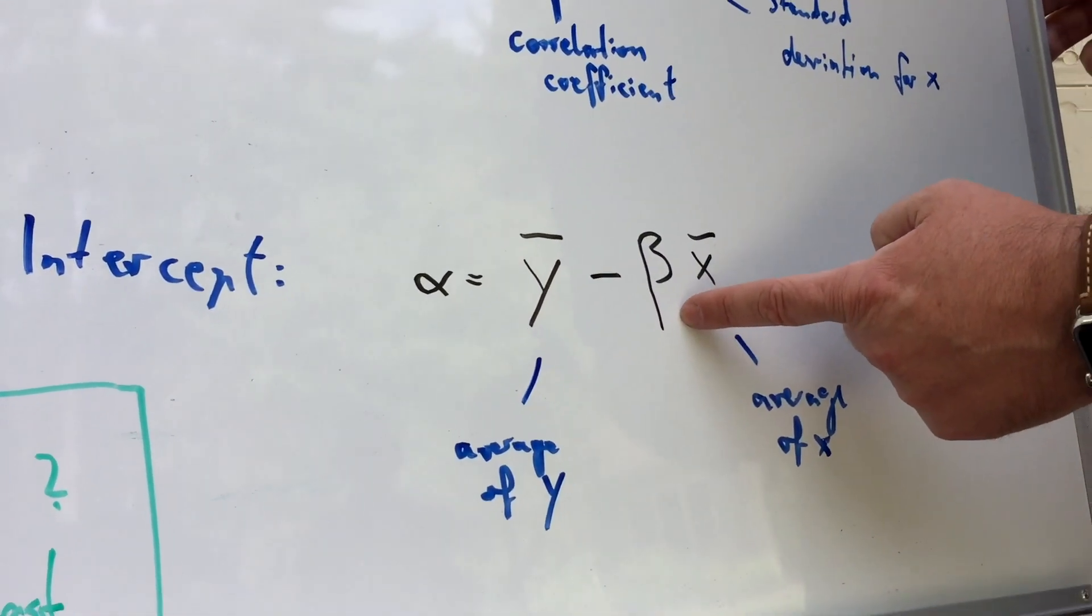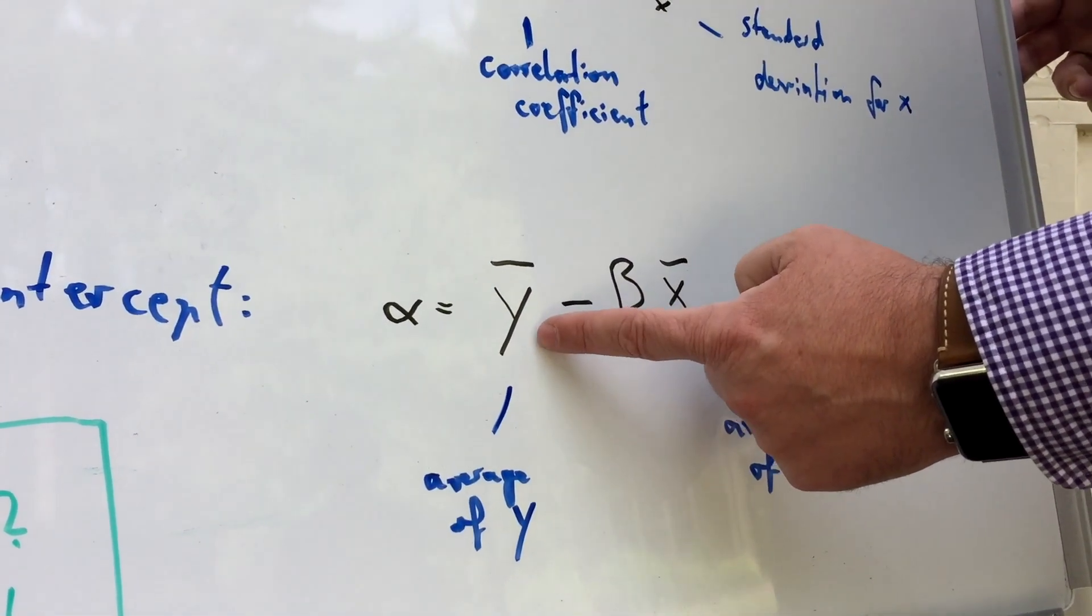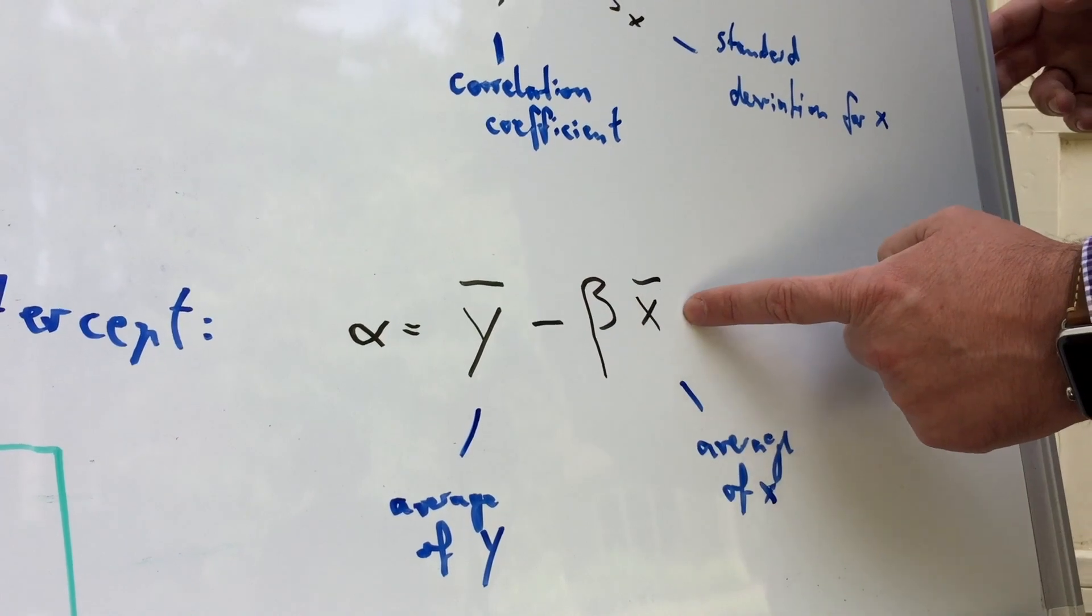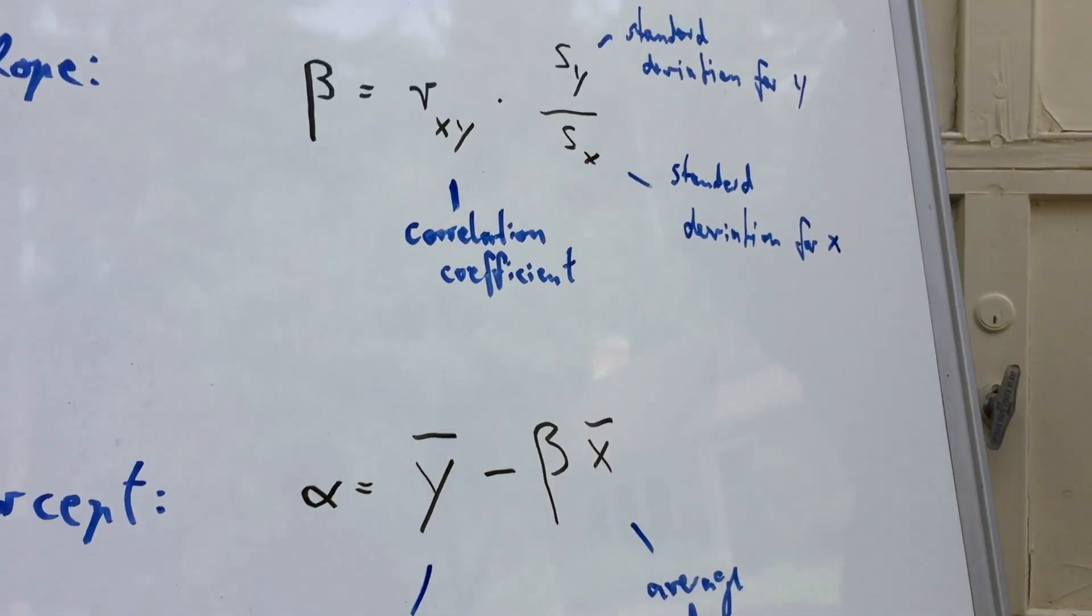So that is something we can easily calculate. And the intercept alpha is equally easy. After we got the slope beta, we just take the average of all the y's minus beta times the average of all the x's. So now we have our two values alpha and beta. And with those two values, we have basically everything we need to really calculate our linear regression curve.